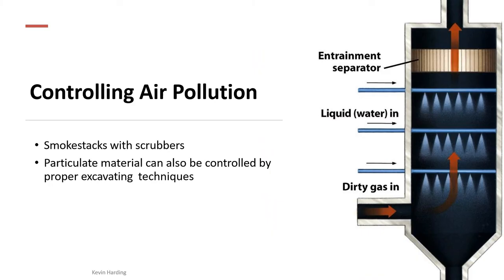Another method to control air pollution is a scrubber. Dirty gas enters at the bottom, travels up through the scrubber, and fine jets of water spray over the gas. Larger particles get trapped in this water mist, or chemical reactions capture the pollutants. They fall down to the bottom, converting an air pollution problem into a water pollution problem — which is easier to contain and clean up.